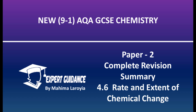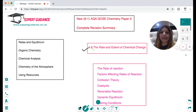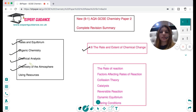Hello friends, welcome to Expert Guidance. Today in this video we'll be covering section 4.6, rates and extent of chemical change. To remind you, for your paper 2 you need to cover rates and equilibrium, organic chemistry, chemical analysis, and chemistry of the atmosphere and resources. All these videos can be found in our playlist, and in this video we'll be covering rates and extent of chemical change.